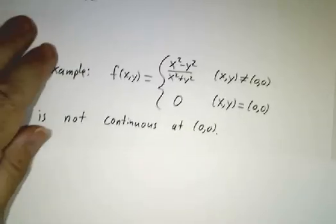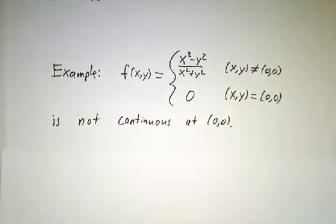Now the rules about continuity and limits are essentially the same as with the single variable. Polynomials are continuous. Sine, cosine, products are continuous. Compositions of continuous things are continuous. Ratios of continuous things are continuous as long as you're not dividing by 0. The rules really are just what you've seen before. And with that, we'll stop.